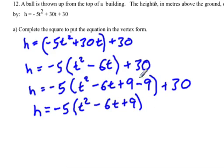We're leaving the plus 9 in the brackets. And we're going to take out the negative 5 times negative 9, which is positive 45, which is 9 times 5 plus 30.